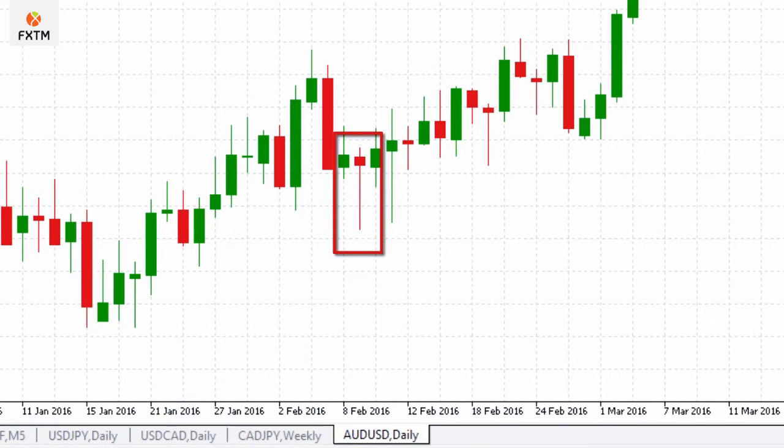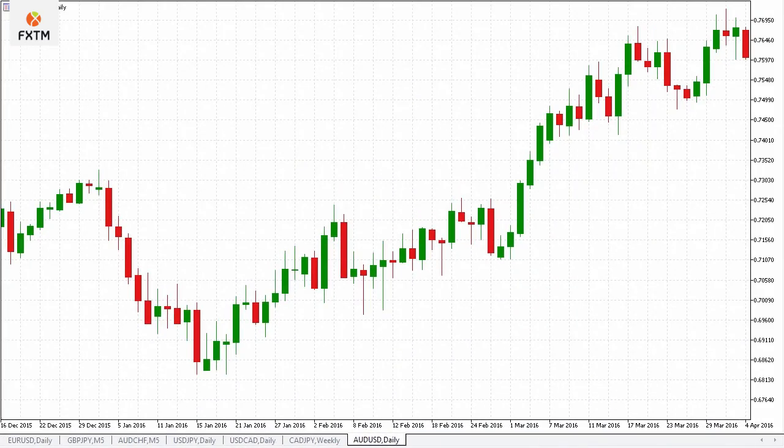Now here we have a hammer, which is just the mirror image basically of a shooting star, that appeared in February of 2016 on the Aussie. It was a relatively short retracement that appeared before the hammer, but it emerged at a relatively strong support level that had been in existence over the previous months.